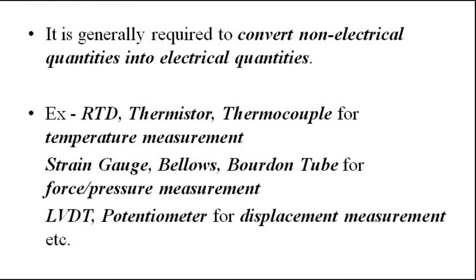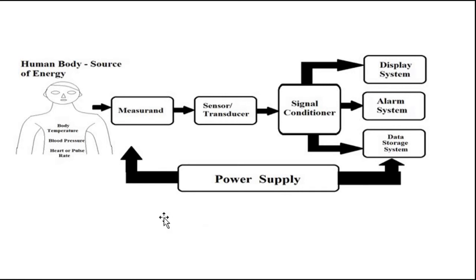There are various examples: temperature transducers, pressure transducers, and displacement or movement transducers which we are going to discuss. This is the basic block diagram of a measurement system. It consists of the transducer block, the signal conditioner block used for amplification, filtering, noise reduction, linearization, and power supply, which processes or analyzes the output of the transducer, and then the output system consisting of display, alarm, or storage.